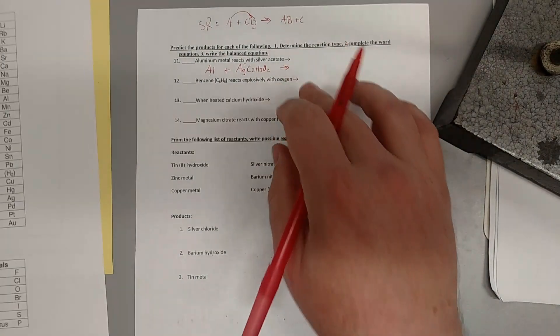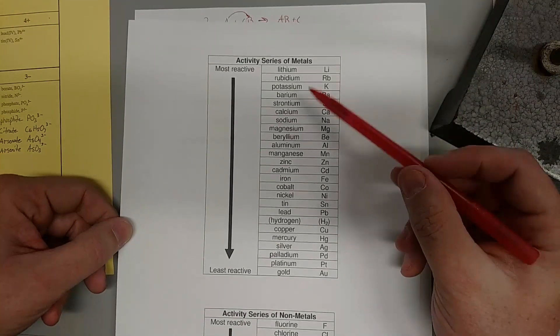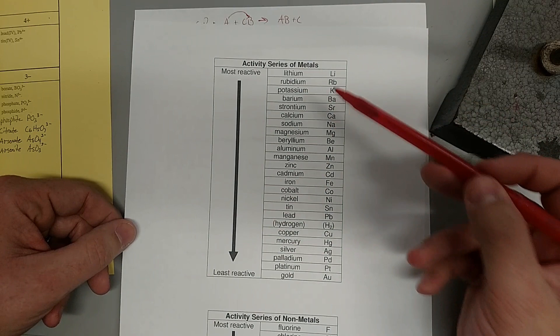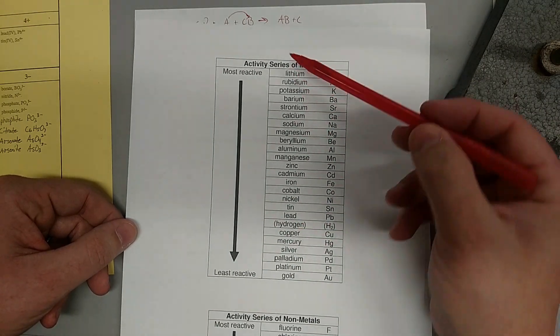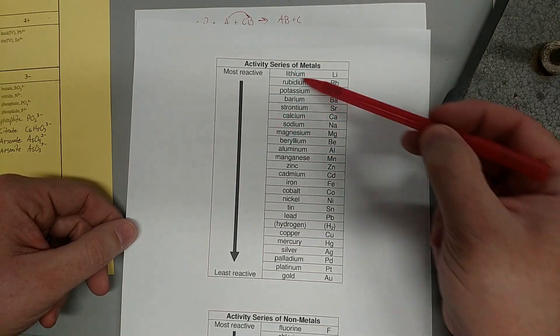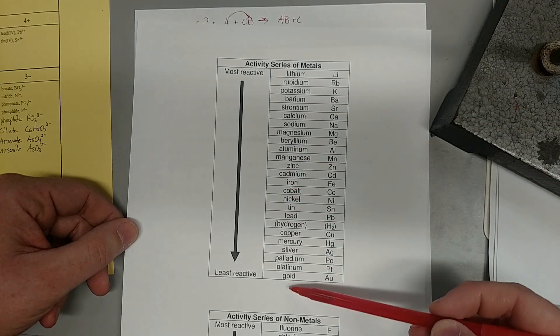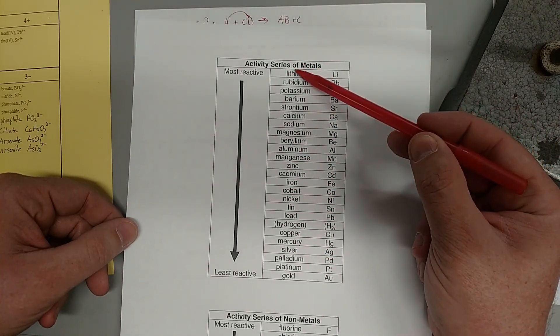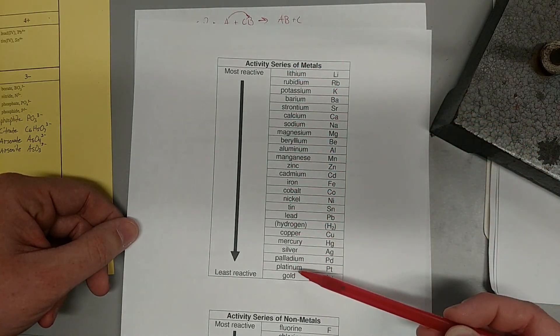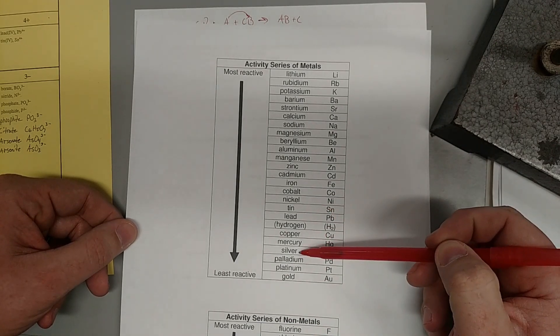But in single replacement, we need the activity series. Because if you're trying to take someone's stuff, you need to be stronger than them. So the way it works is anybody up here can take away anything below it. So lithium takes away anyone else's partner.